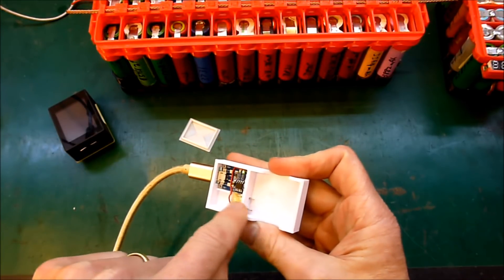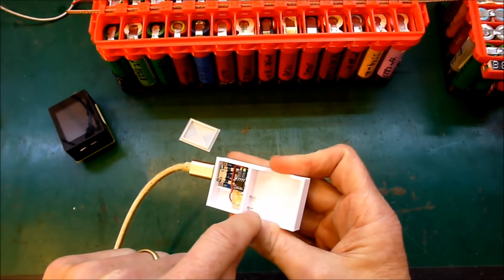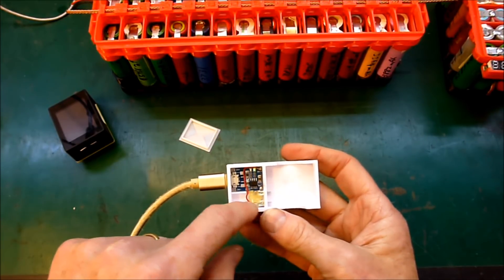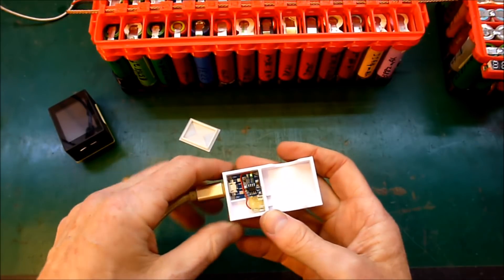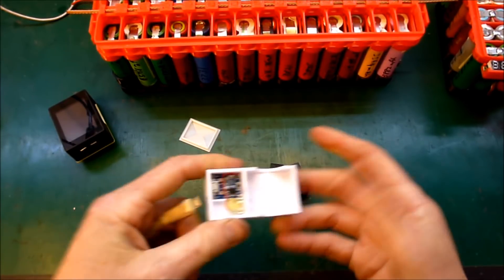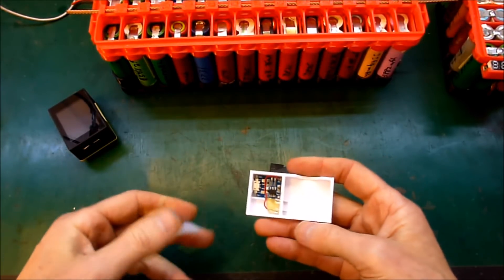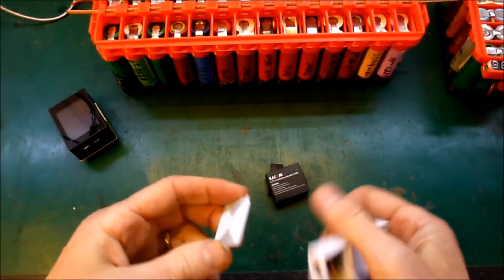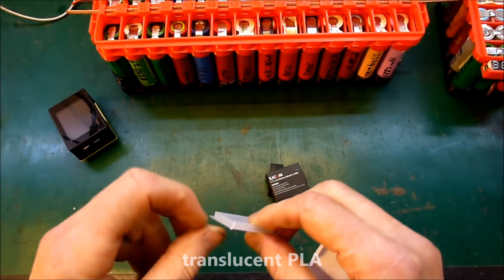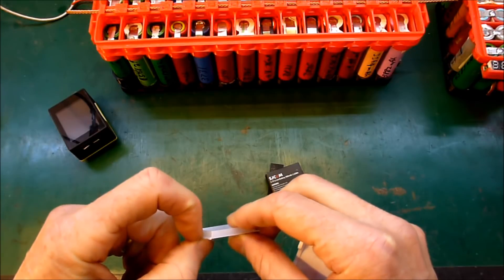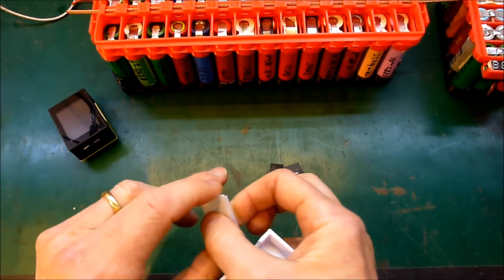And inside it is just our old friend the TP4056 board, two little pieces of nickel strapping, and a little bit of hot glue. That's about it basically. So it's a very simple design.